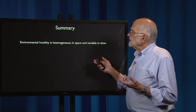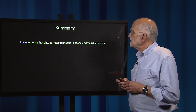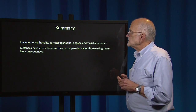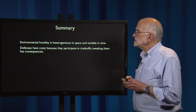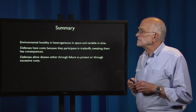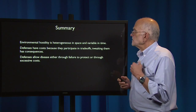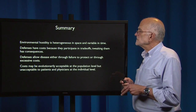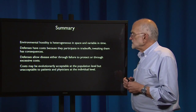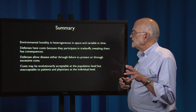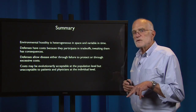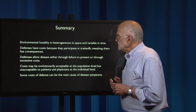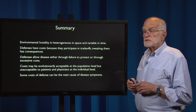To summarize: environmental hostility is heterogeneous in space and variable in time. Defenses have costs; because they participate in trade-offs, tweaking them has consequences. Defenses allow disease either through failure to protect or through excessive costs. Costs may be evolutionarily acceptable at the population level but unacceptable to patients and physicians at the individual level — that's a conflict. Some costs of defense can be the main cause of disease symptoms.